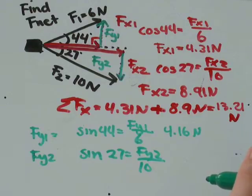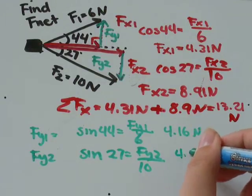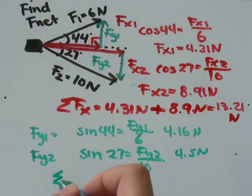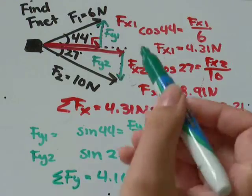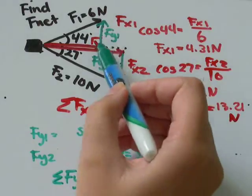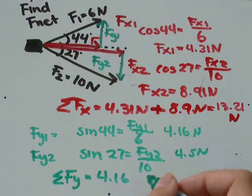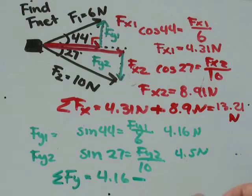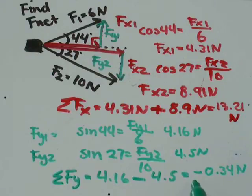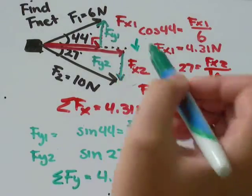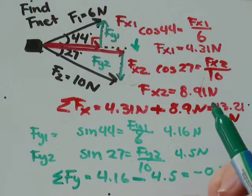Now to find the sum of the forces in the y direction, I'll take the first one, 4.16. Notice that this arrow here and this arrow are going in opposite directions. So I'm going to subtract the forces instead of adding them this time. Minus 4.5. And I get that that's equal to about negative 0.34 newtons. Don't worry about the negative sign too much. It just tells us the direction. So the direction is going to be going down in our final answer.